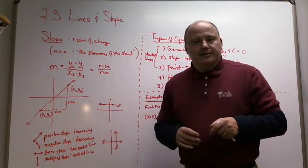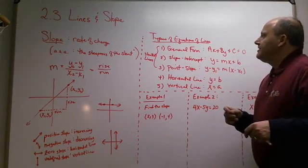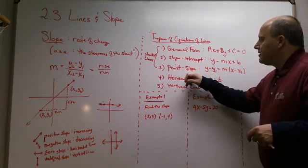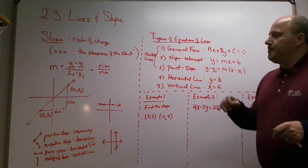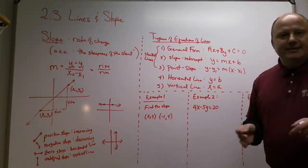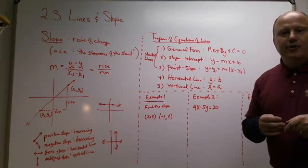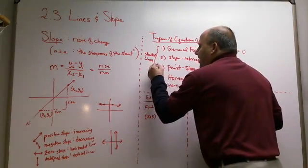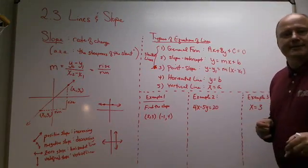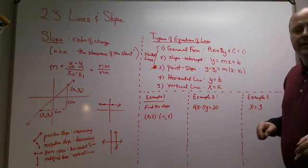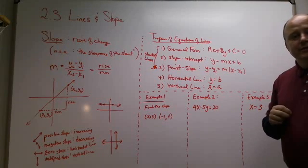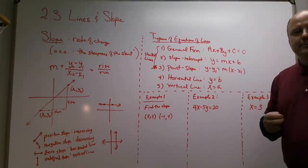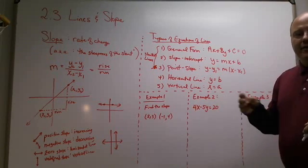So those are your four possibilities. Now, the types of equations we're going to deal with in 2.3 are: general form, slope-intercept form, point-slope form, horizontal lines, and vertical lines. I personally don't use point-slope form — I can use slope-intercept form to handle everything instead of memorizing two formulas. Some people swear by point-slope form, but I keep it simple and stick with slope-intercept.